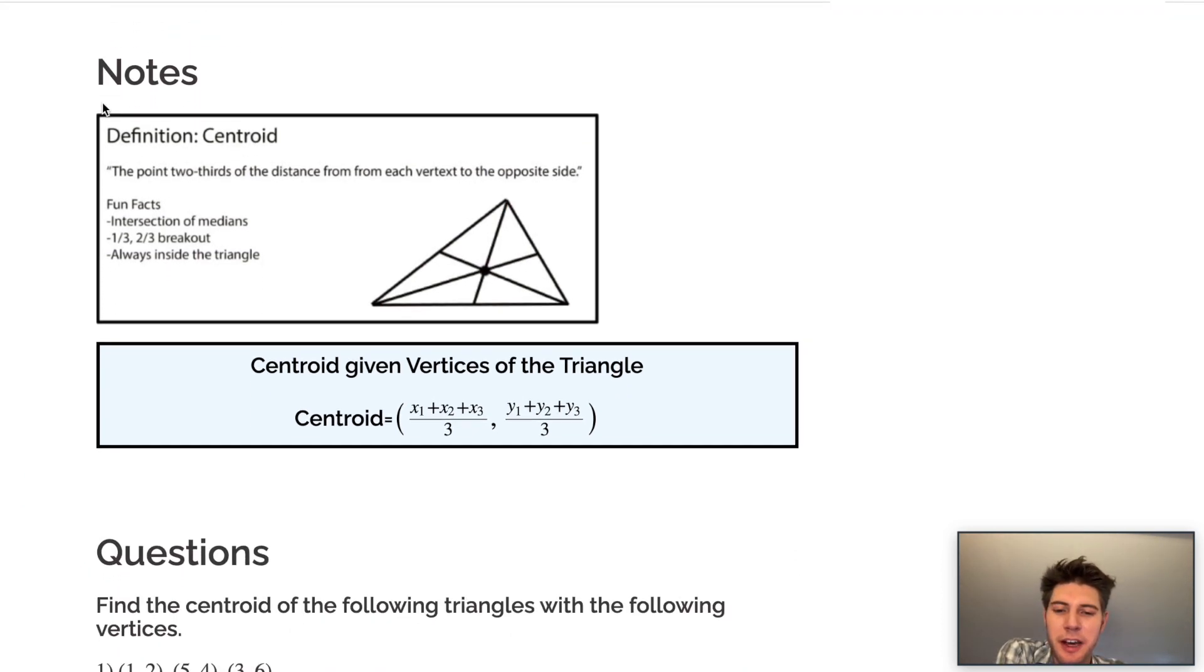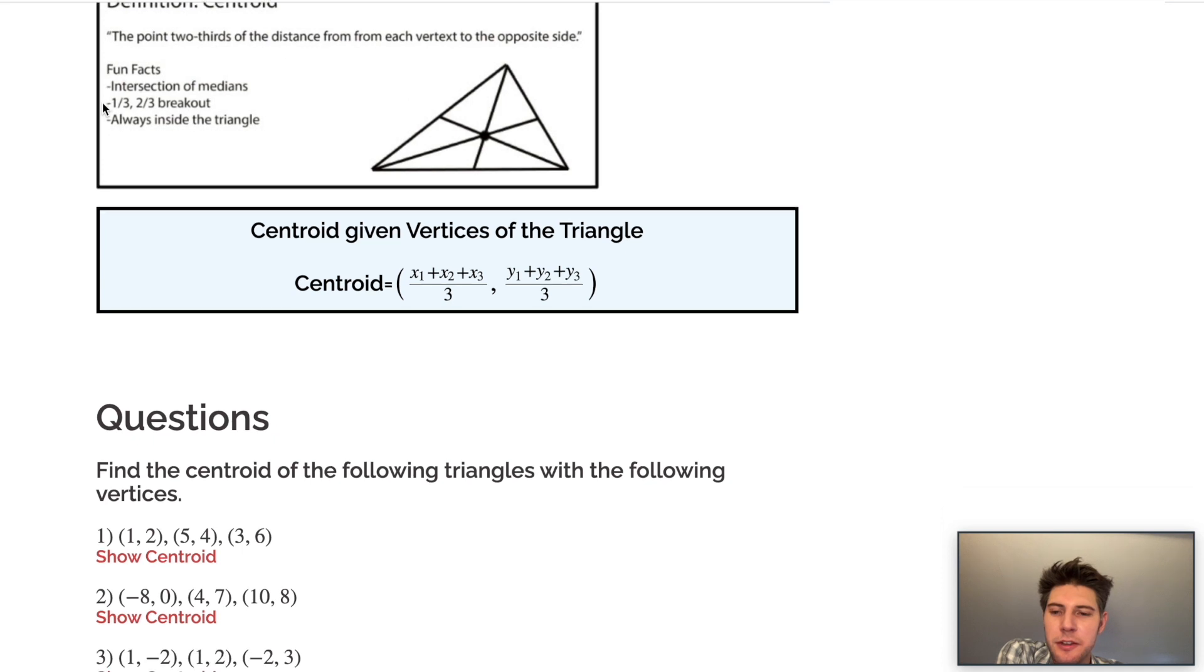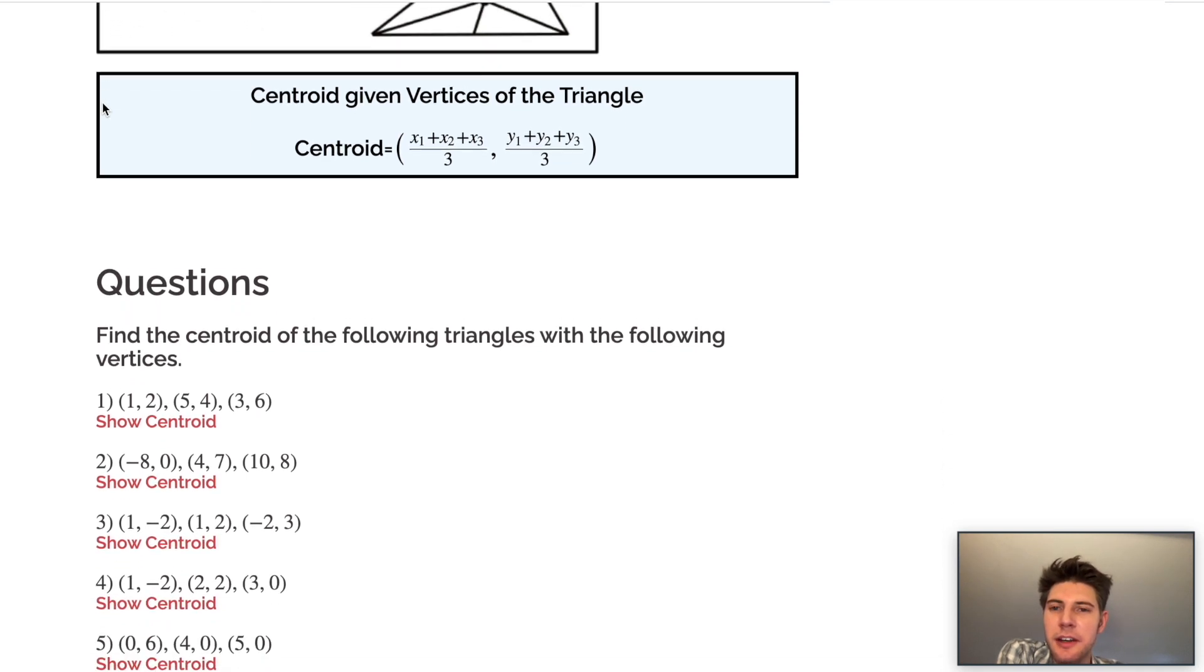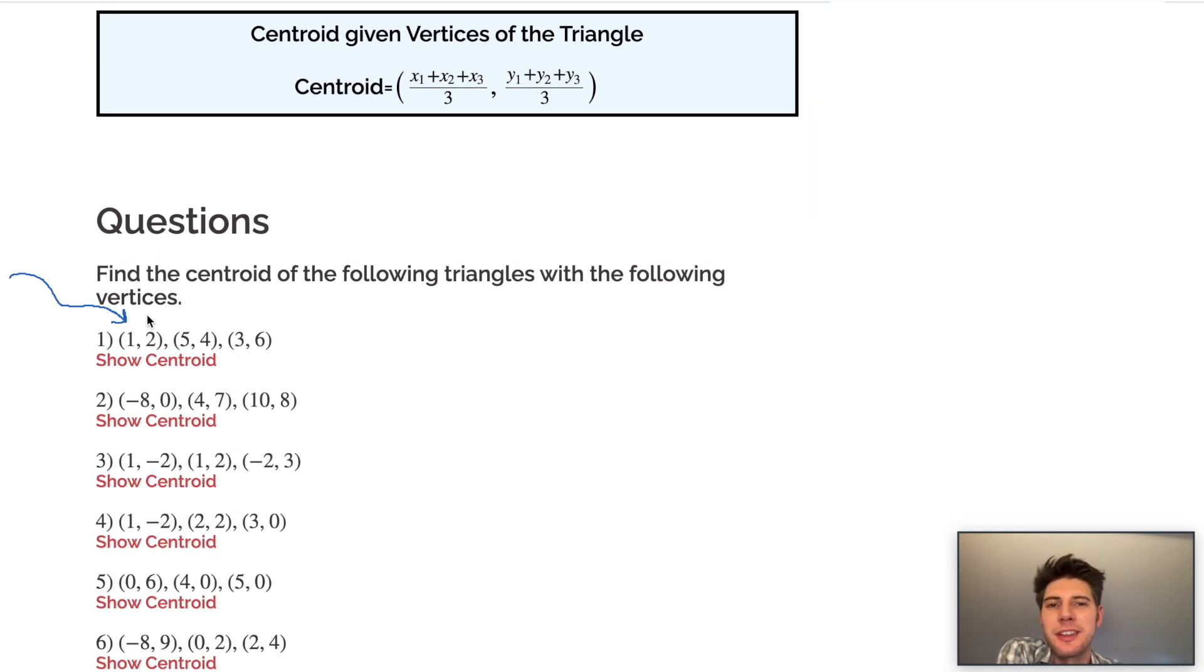Here's an example question of how this could be helpful. If we look at number one, if these three points are the vertices of a triangle and we want to know what is the centroid of that triangle, what is the intersection of the medians, all we have to do is use this formula.